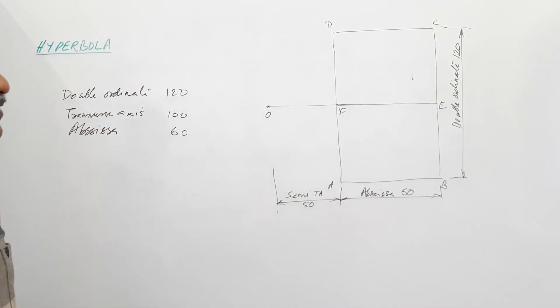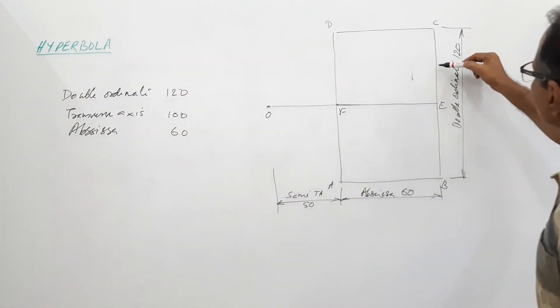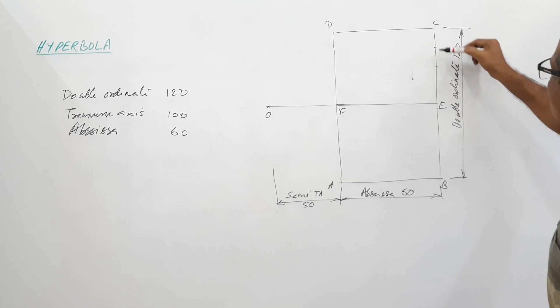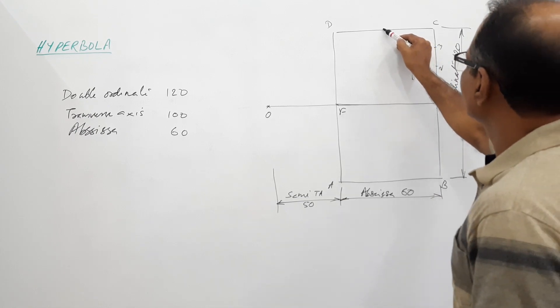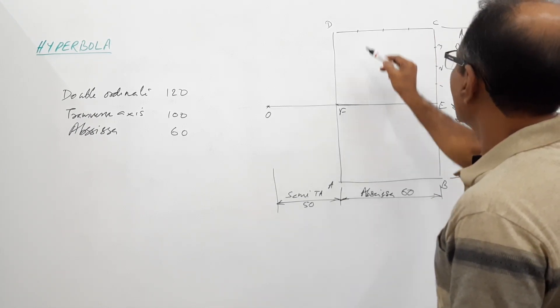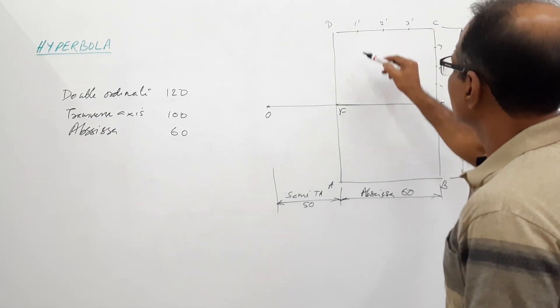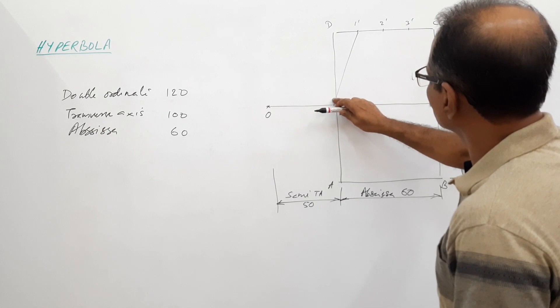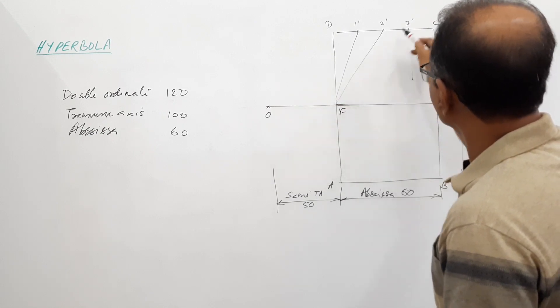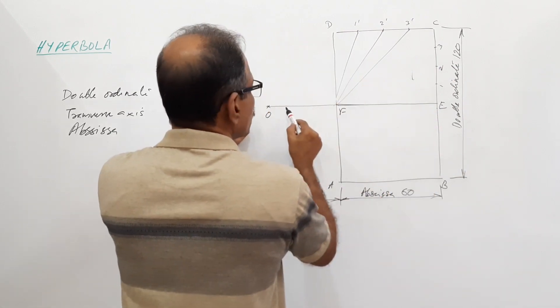Now I divide EC into four equal parts: 1, 2, 3. I divide CD into four equal parts and mark 1 dash, 2 dash, 3 dash. I join 1 dash, 2 dash, 3 dash to F. I join 1, 2, 3 to O.